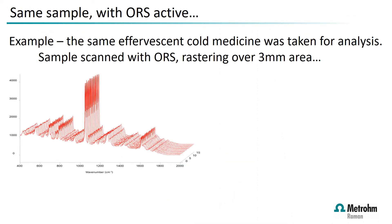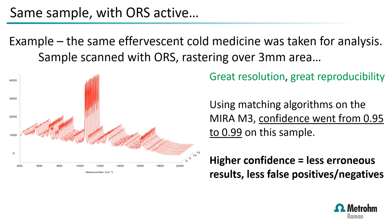Using orbital raster scanning on the same sample shown earlier — rastering over a three-millimeter area — the consistency of the scans is excellent and all peaks line up extremely well. This gives extra confidence during matching that you are collecting the correct sample: great resolution, great reproducibility, fewer false positives, fewer false negatives.